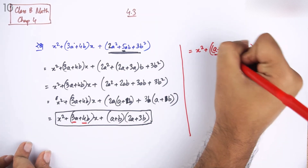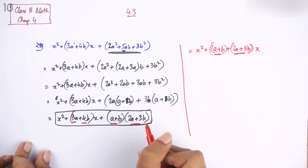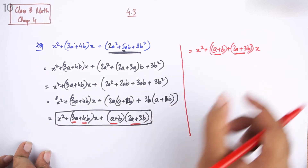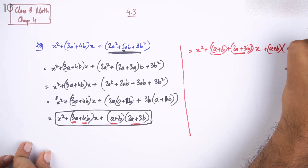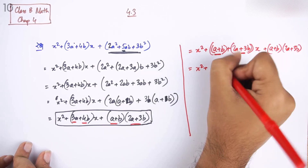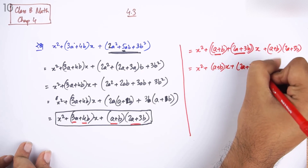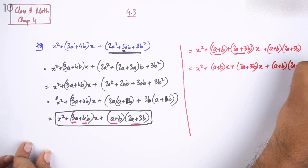Now, a plus b and twice a plus 3b — that's the same grouping. What is the product? A plus b into twice a plus 3b — that's how we see it. This product is the same product. So we can see that x squared plus a plus b into x, plus twice a plus 3b into x, plus a plus b into twice a plus thrice b.